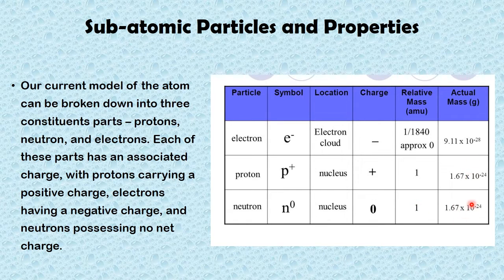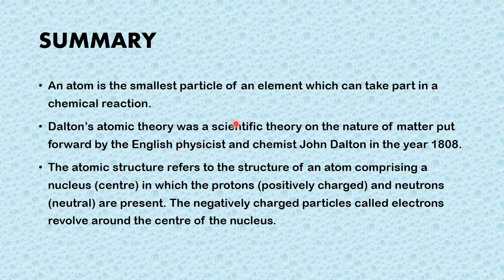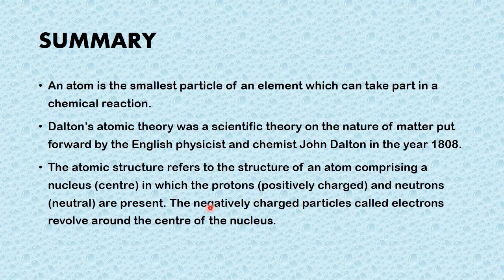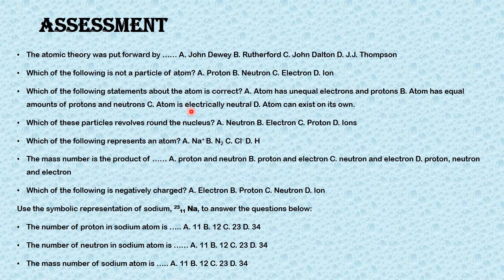Now we've come to the end of our lesson for today. Let's take a quick look at the summary. An atom is the smallest particle of an element which can take part in a chemical reaction. Dalton's atomic theory was a scientific theory on the nature of matter put forward by the English physicist and chemist John Dalton in the year 1808. The atomic structure refers to a nucleus at the center containing protons and neutrons, with negatively charged electrons revolving around the nucleus. I want you to pause this video and answer the questions in this assessment to see how much of the lesson you have understood. I will see you again in the next lesson. Bye bye.